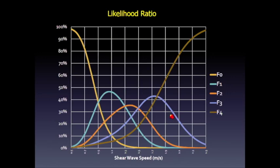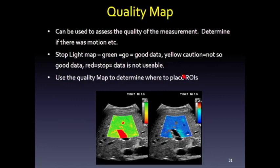For interpretation, a large meta-analysis examined likelihood ratios rather than simple cutoffs. At 1.3 meters per second, for example, there was a 2% chance of being F0, a 10% chance of F4, a 20% chance of F3, and a 35% chance of F1 or F2. This shows that in the middle range, precise cutoffs are unrealistic, but elastography performs well for clearly normal and clearly abnormal values, which is why the SRU developed the two-cutoff approach.